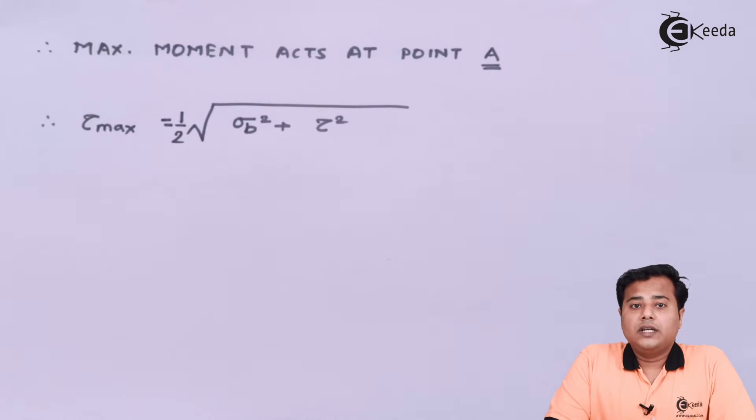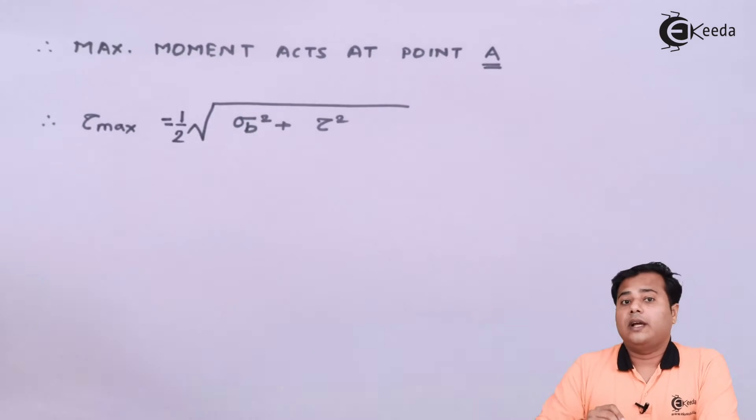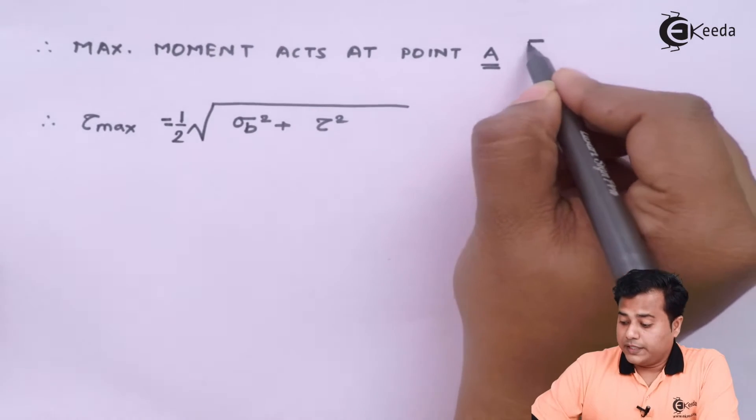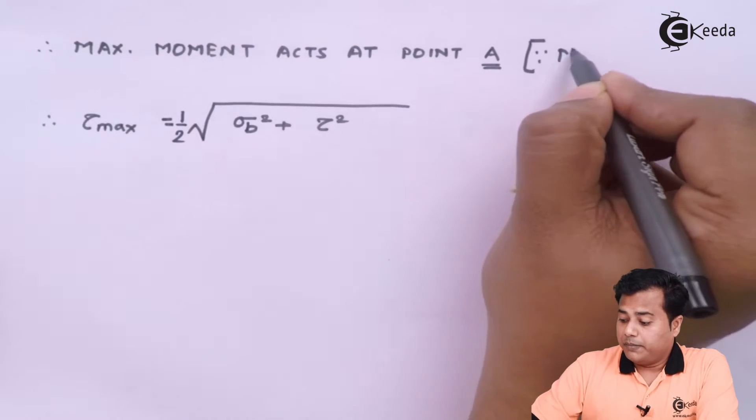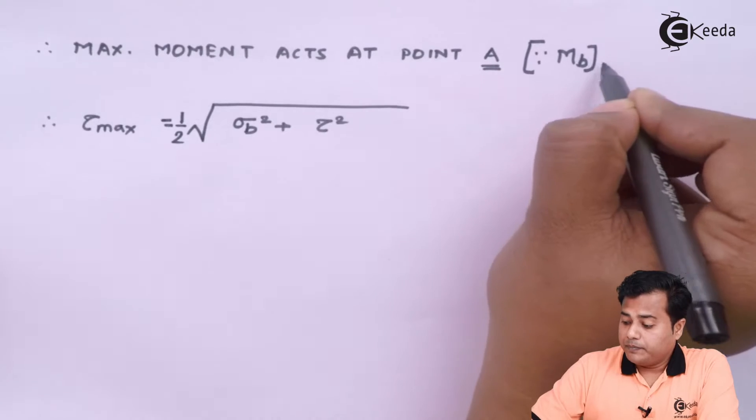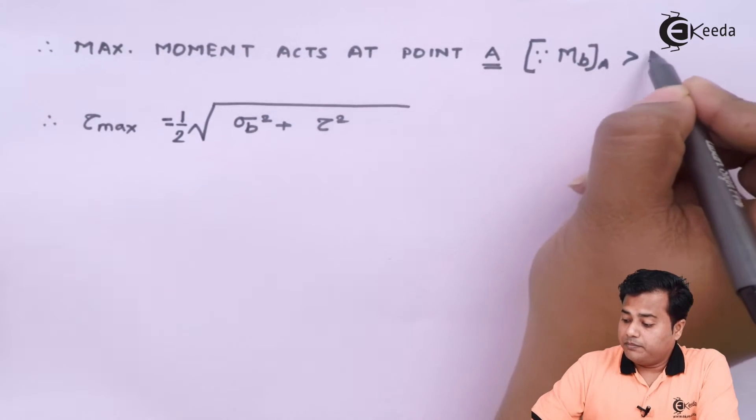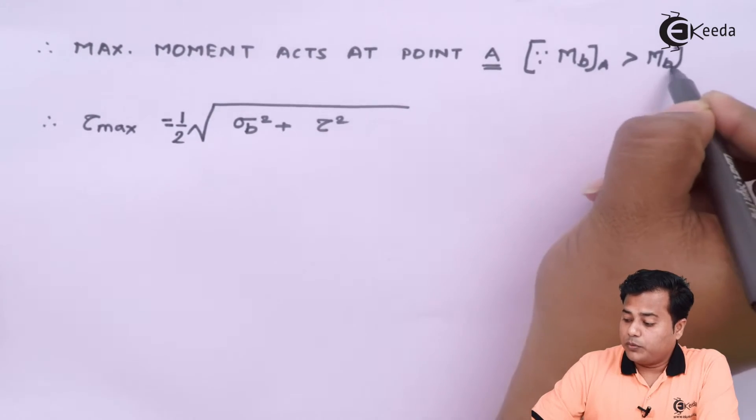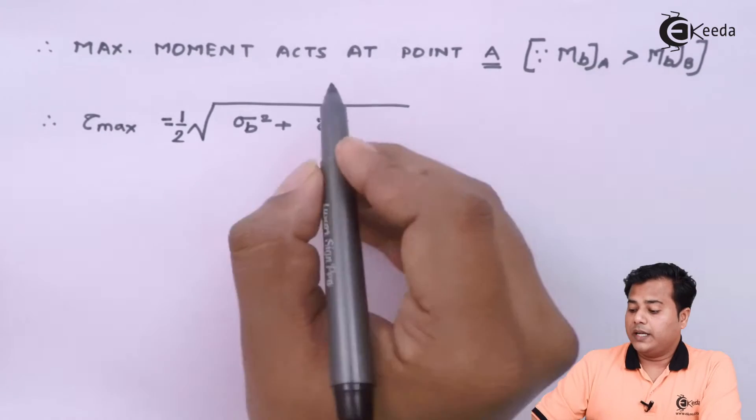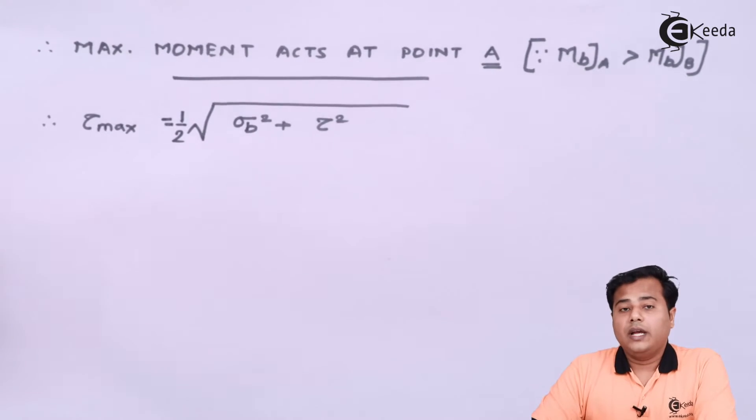The maximum bending moment acts at point A. We can compare the values: bending moment about A is greater than bending moment about point B. That's the conclusion we have drawn, and that's why we need to consider the maximum bending moment in this case.